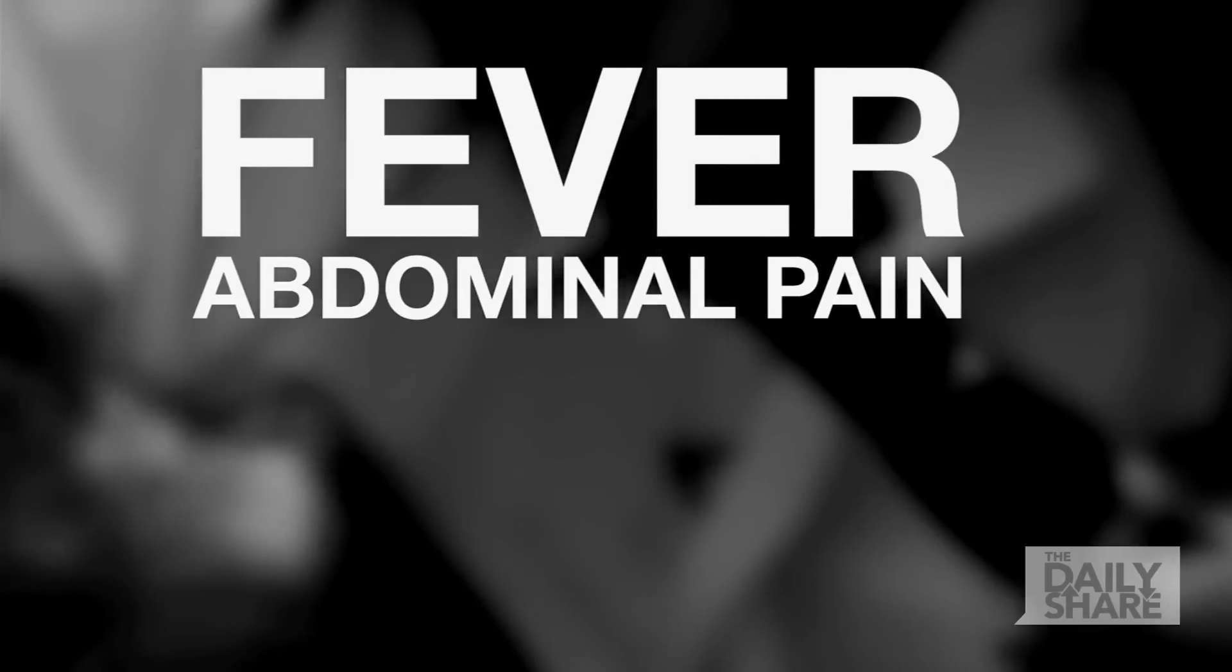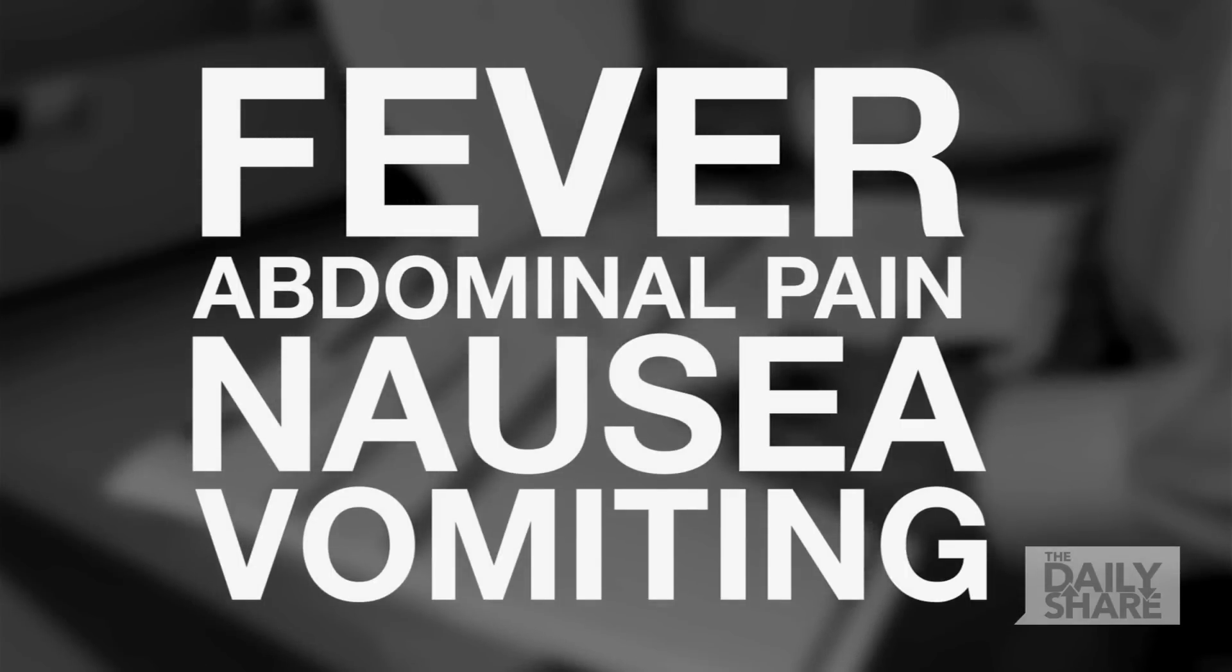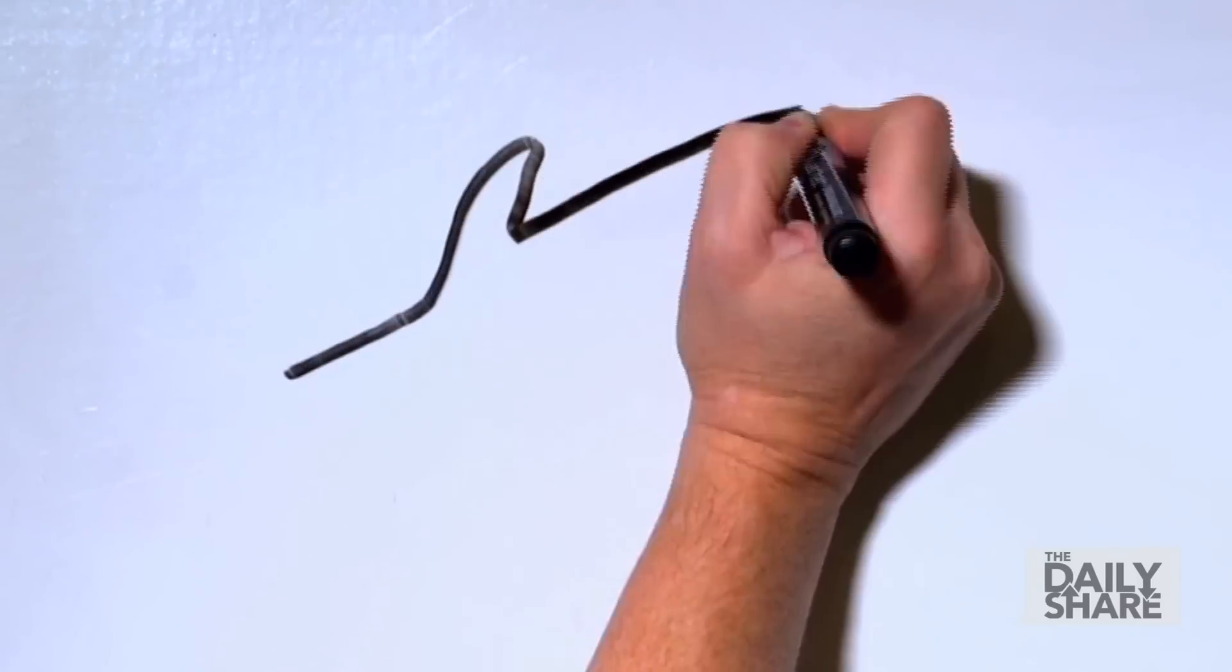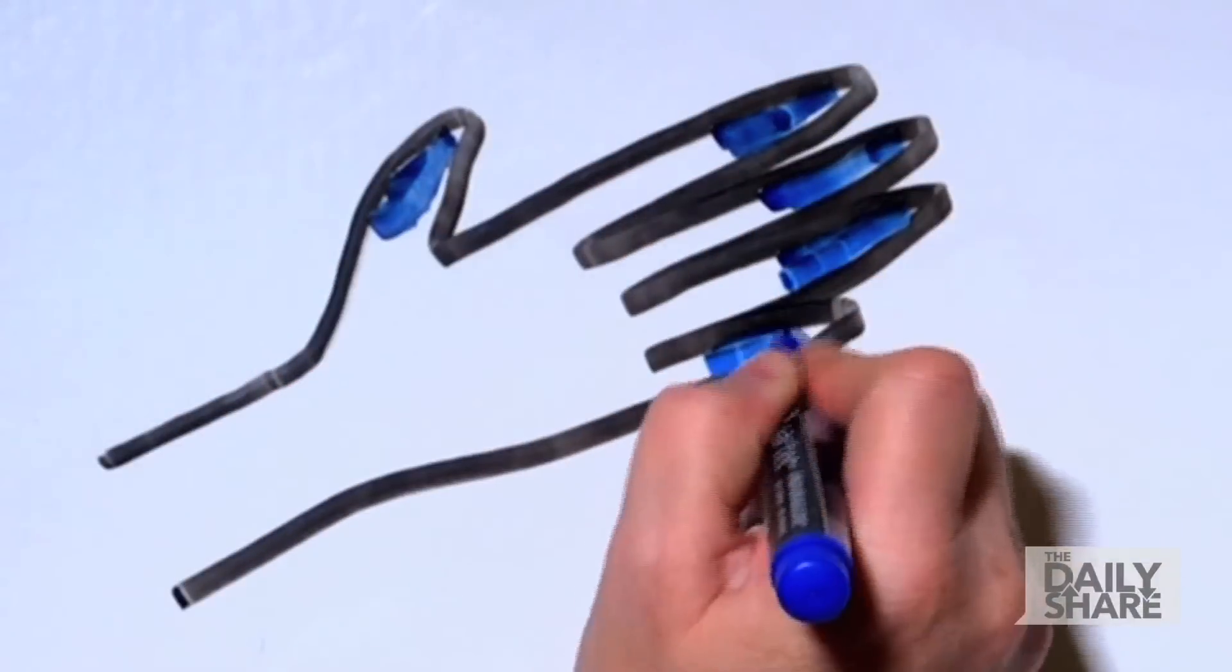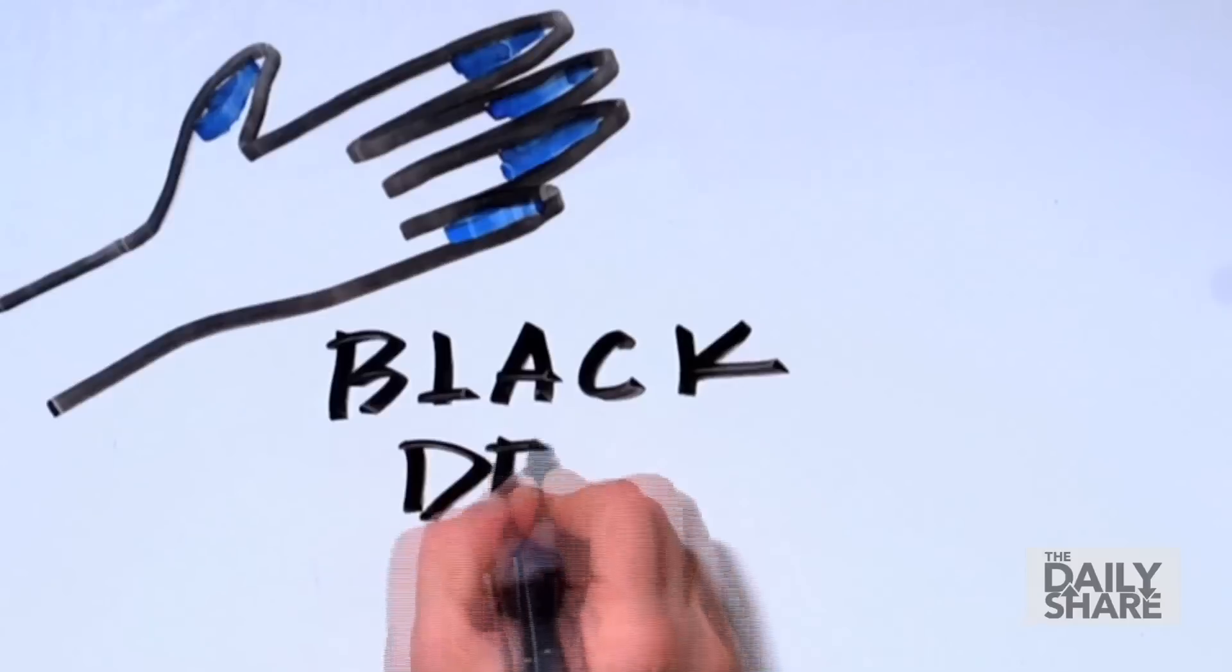Symptoms are generally similar to the flu: fever, abdominal pain, nausea, vomiting. But a telltale sign of the plague is swollen, black and blue lymph nodes, usually near the site of the flea bite. That's how the name Black Death arose.